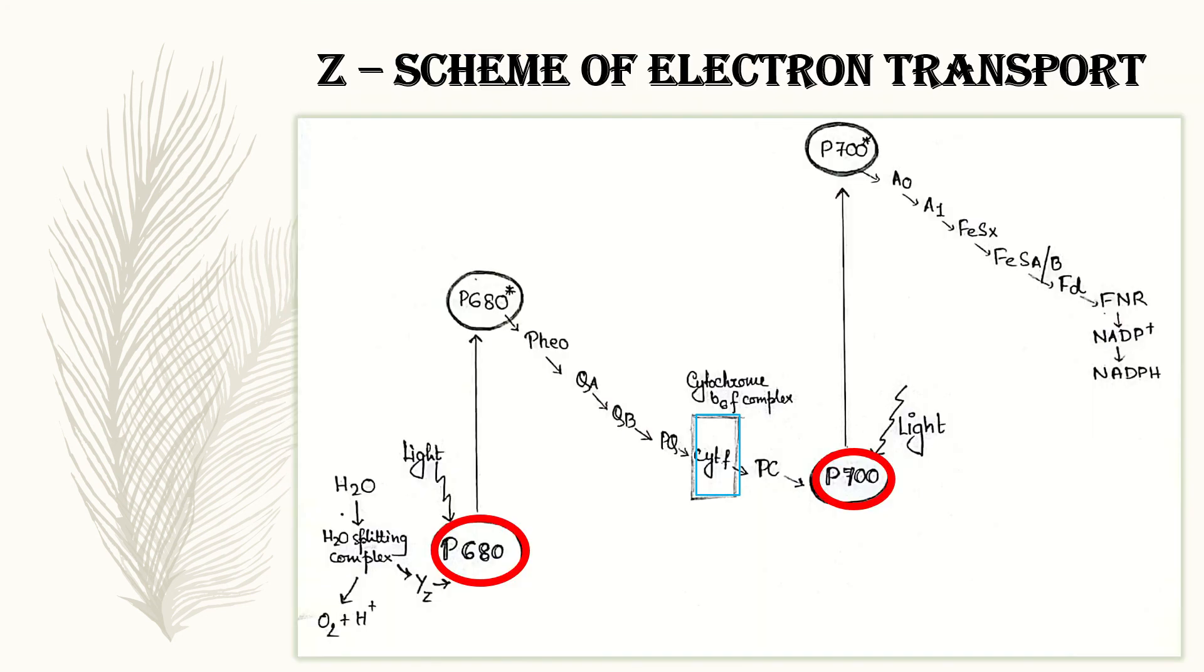Now, let's analyze this Z scheme of electron. Why do we call it a Z scheme? It is a zigzag pattern that is being followed by the electron and it also resembles English letter Z. Light incident here will excite the specialized chlorophyll in the reaction center. It will become excited and an electron will be ejected from the ground state to a state whose energy is higher.